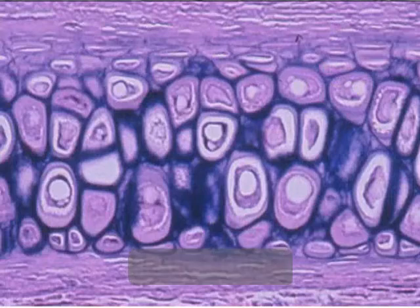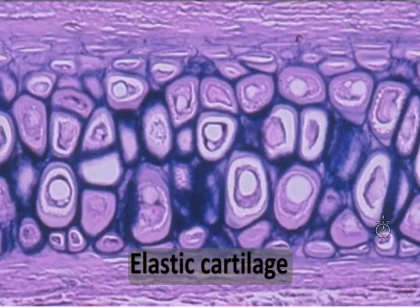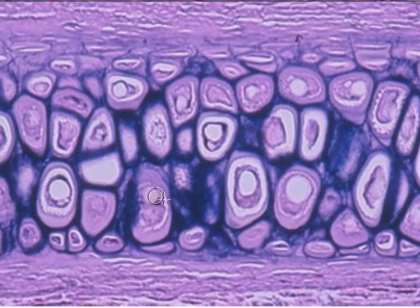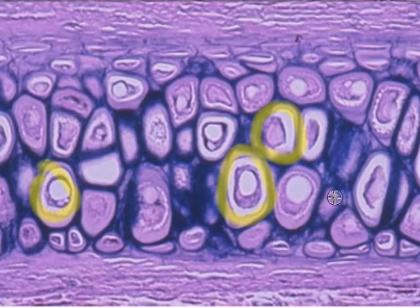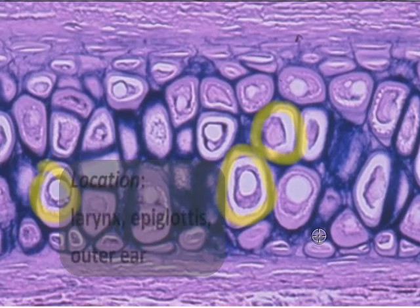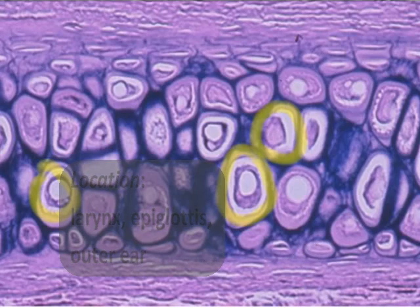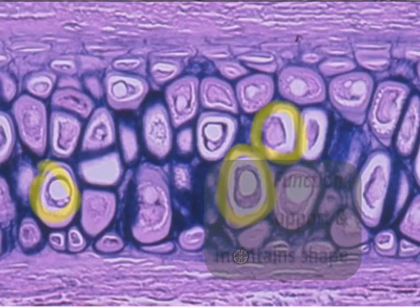This is our final cartilage — elastic cartilage. Notice the matrix-to-chondrocyte ratio: there's very little matrix here, it's very thin, the lacunae are very close together, and the large chondrocyte cells within them are crammed together. This is the other extreme from fibrocartilage. Elastic cartilage is found in the larynx forming the epiglottis, covering the superior portion of the voice box, as well as in the outer ear. It's very thin, provides support, and maintains the shape of structures.